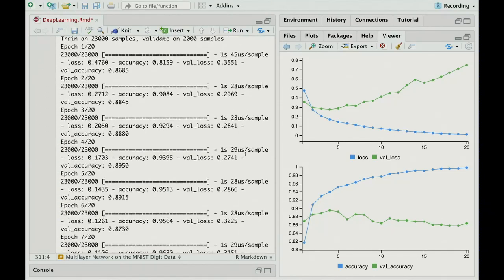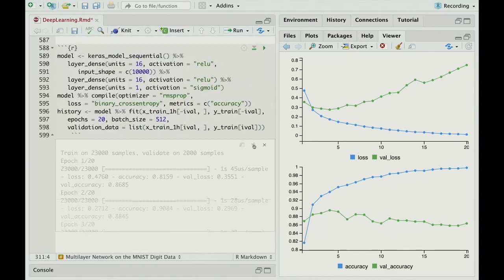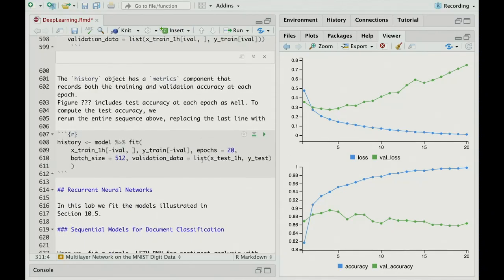I do recall trying some dropout and other things here, but it didn't seem to make much difference. We've just shown the validation accuracy. We would also like to see the test accuracy. So I basically run the program again, but this time using the test data and not the validation data.